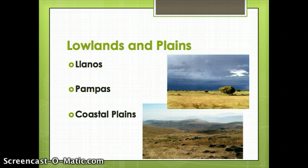We also have some lowland and plains areas. The Llanos are located in Colombia and Venezuela, just north of the Amazon. The Pampas is a plains region in northern Argentina.